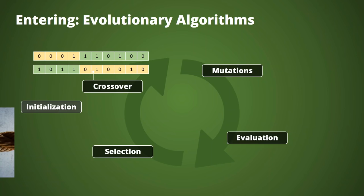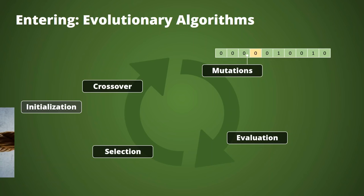You randomly select a cutting point — say, after the fourth feature — and create offspring by combining parts from both parents. You can also generate a second child by combining the complementary parts. Then in biology, children also have mutations. Here, that means randomly flipping single spots in this bit vector. Crossover helps by jumping to completely different areas of the fitness landscape — helping you escape local maxima. Mutations are smaller changes that help you slowly climb further toward the hill when you're already in a promising area.